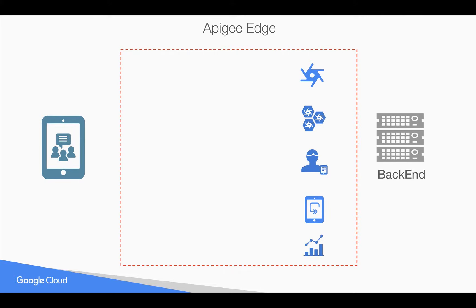You are creating API proxies, which are nothing but APIs that will be exposed to the clients. You will be packaging these API proxies into API products which will be exposed to developers. There will be users or automated machines like a developer portal which will be creating these developers when a developer gets registered, and you would like to control who can actually create applications and who can see and create custom reports.